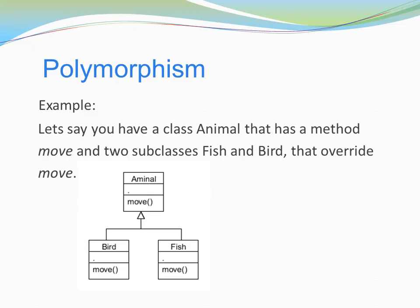Let's say you have a class Animal that has a method move, and two subclasses, Fish and Bird, that overwrite move. For our example, let's assume that the move method of Animal prints 'moving', the move method of Bird prints 'flying', and the move method of Fish prints 'swimming'.